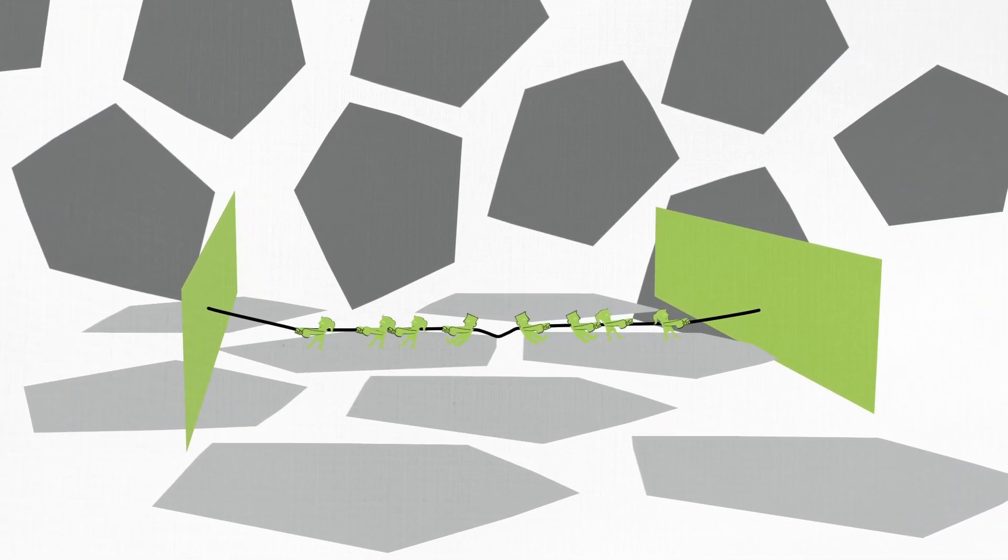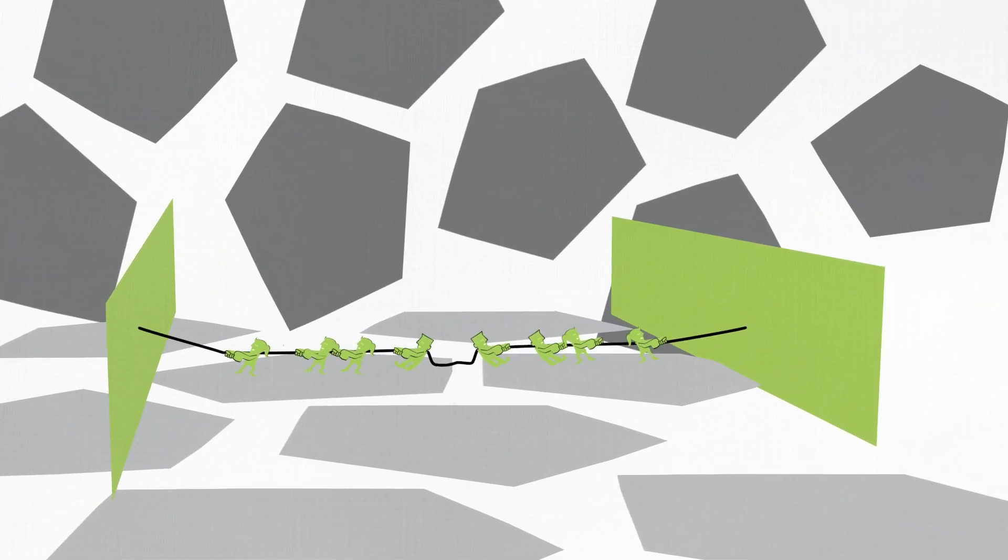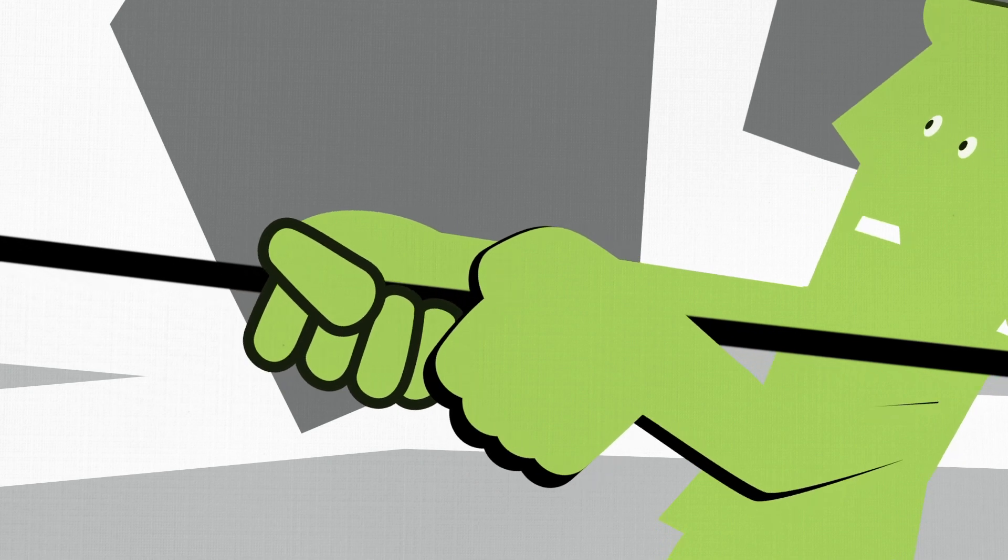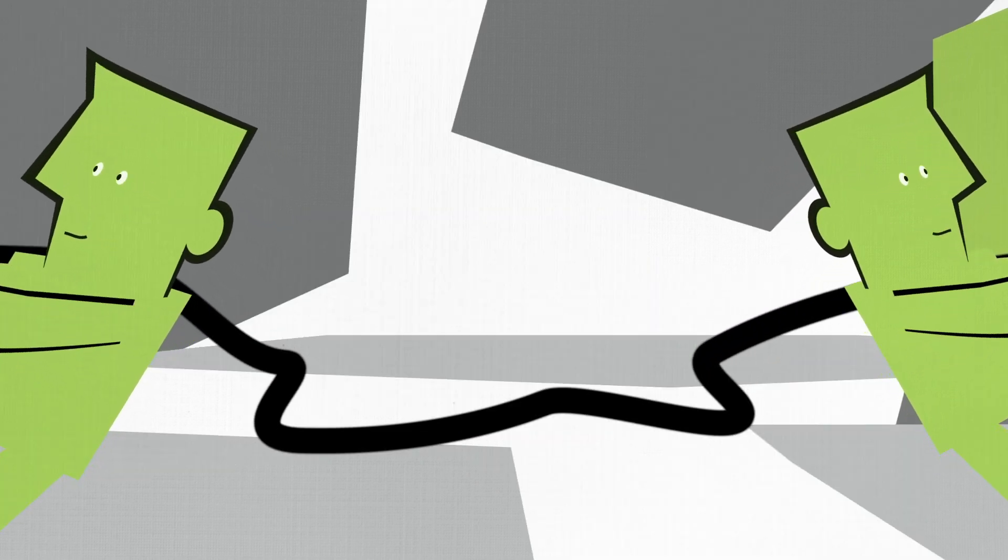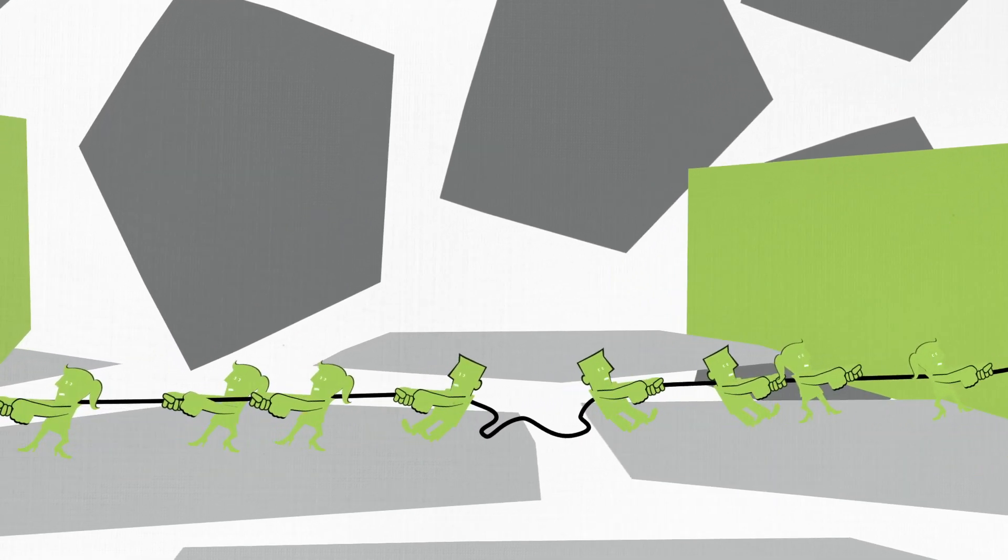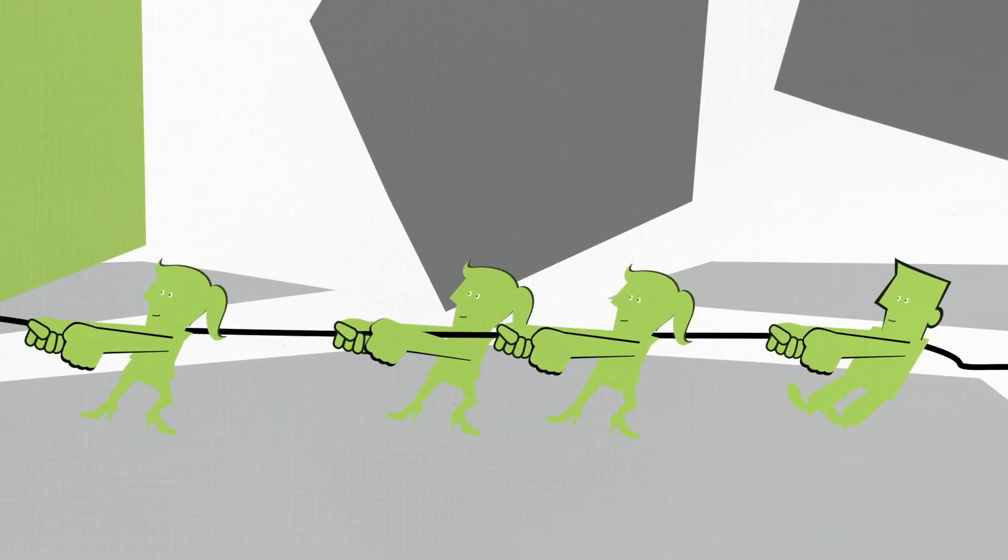So muscle contraction is like a tug-of-war. Think of the motors like hands and the actin filaments like ropes, and pulling those ropes together causes the muscle to shorten and causes the muscle to contract.